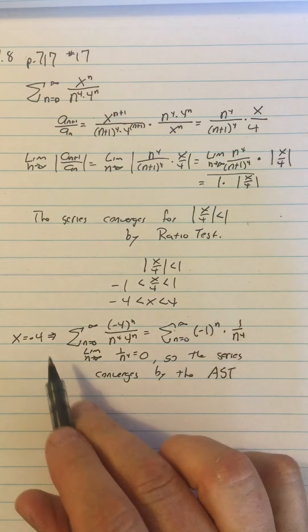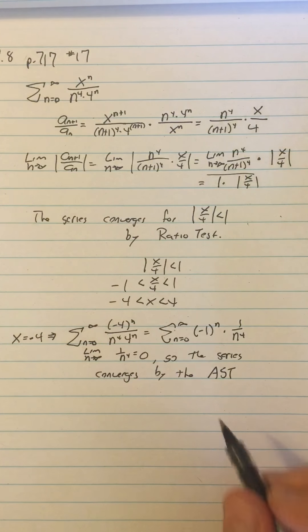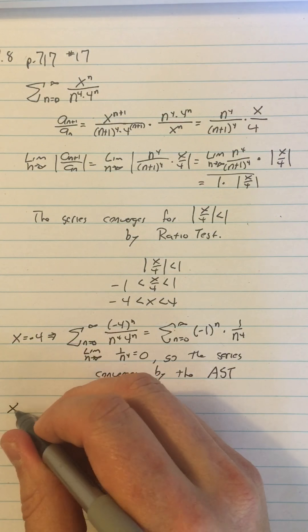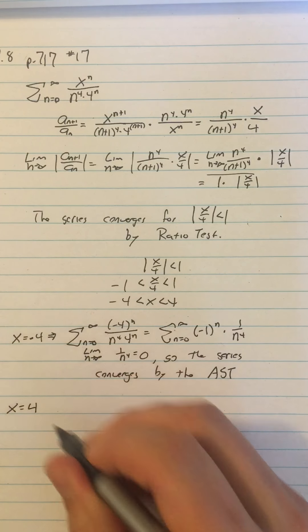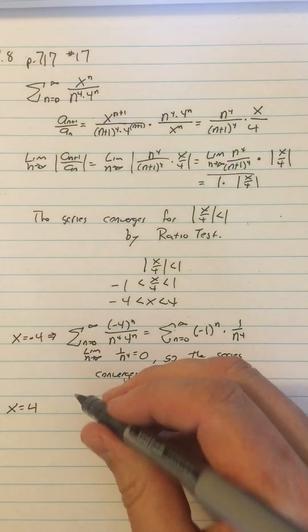For each one of these endpoints, I have to cite a reason why the series converges. Maybe it'll be a comparison series or something. So then I have, next one I'll do x equals 4.